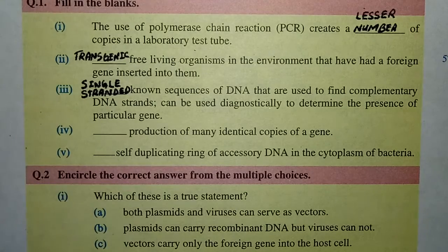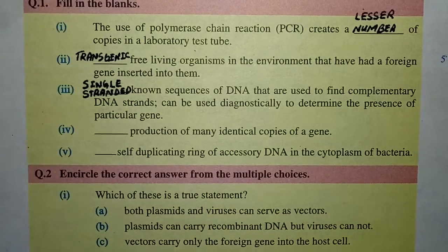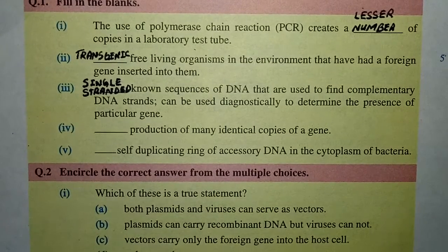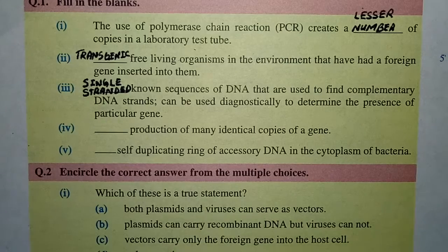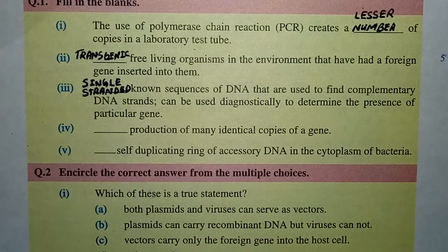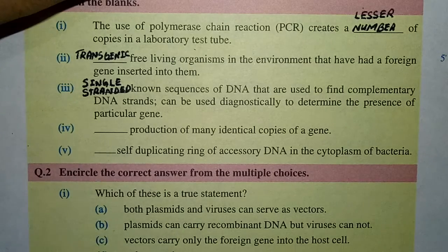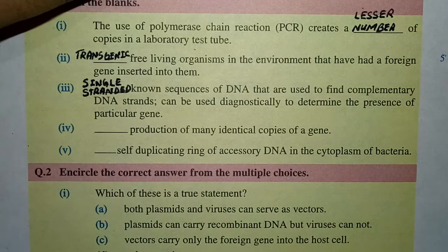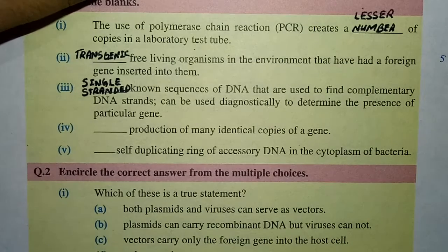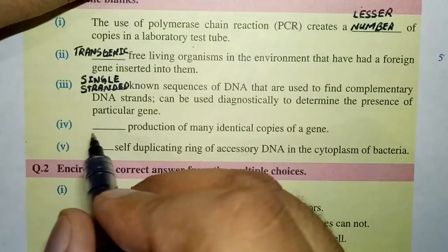Let's move to the next one: 'Dash — production of many identical copies of a gene.' The answer is gene cloning — the production of many identical copies of a gene is called cloning.